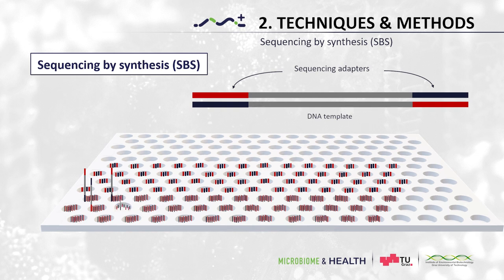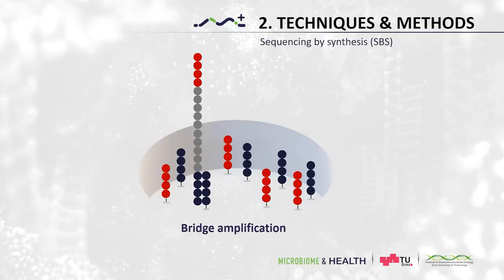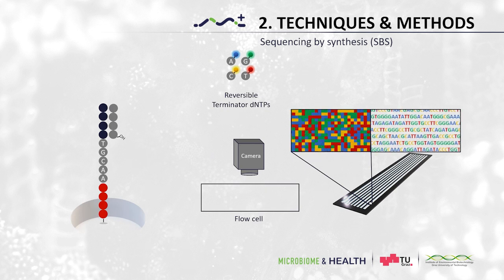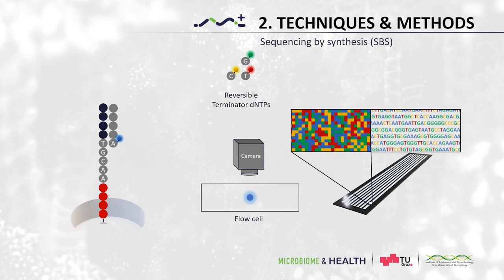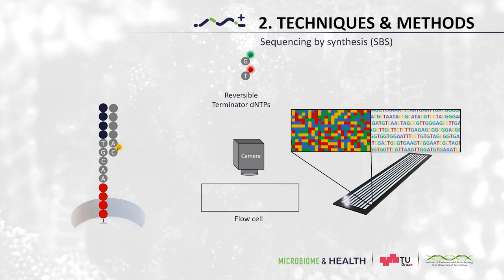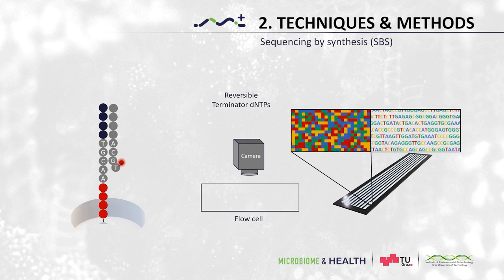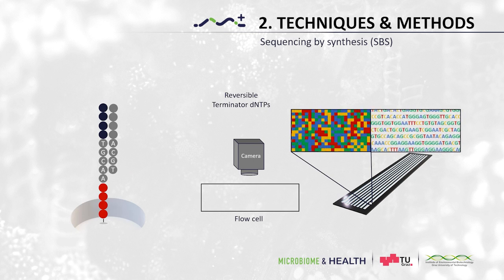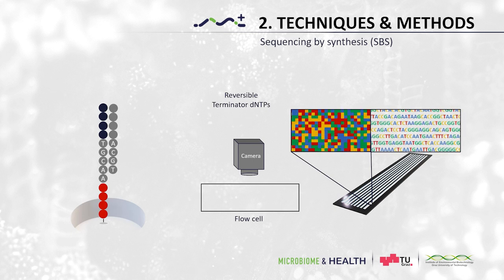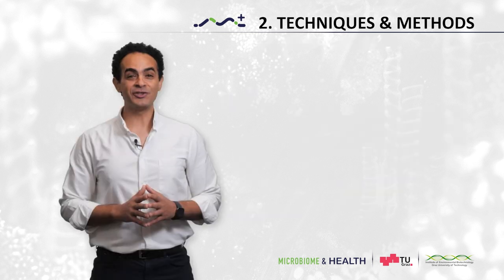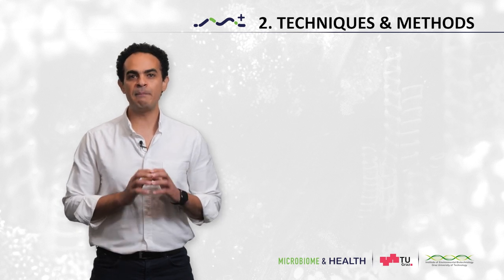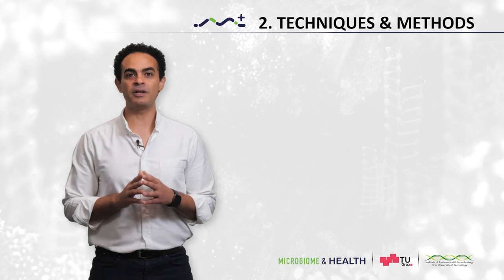Once the fragments have attached, cluster generation begins. This step makes about 1000 copies of each fragment of DNA and is done in a process called bridge amplification. Next, reagents including modified nucleotides with fluorescent tags are added. Since these nucleotides have reversible three-prime blockers, the DNA polymerase can only add one nucleotide at a time. A camera then records the emitted fluorescence and determines what base was added according to the wavelength produced. The process continues until the full DNA fragment is sequenced. High-throughput sequencing produces between millions to billions of sequences, and in the next chapter we will dive into data analysis.